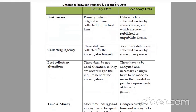Collecting agency. These data are collected by the investigator himself. Secondary data were collected earlier by some other person. Post collection alterations: these data do not need alteration as they are according to the requirement of the investigation.